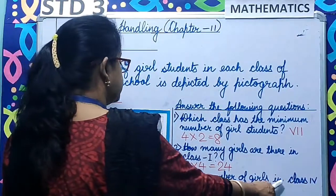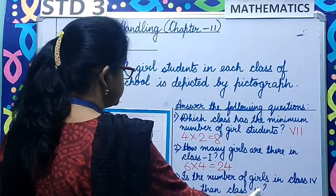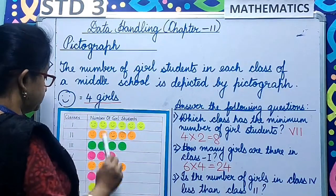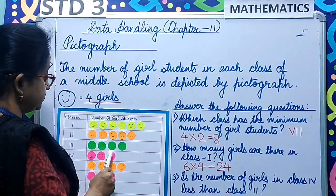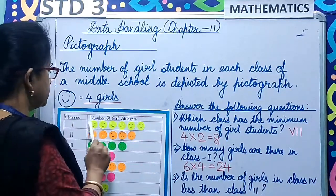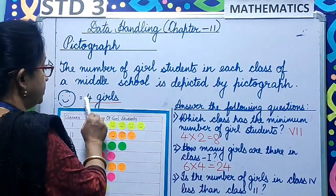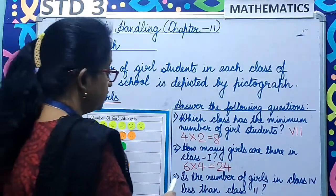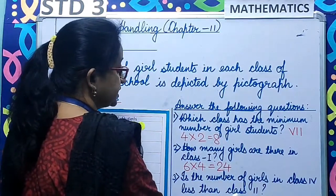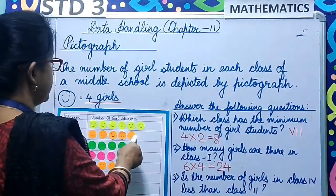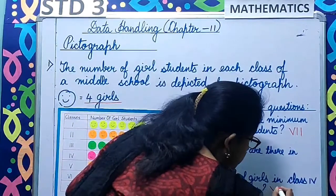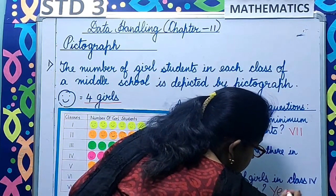Is the number of girls in class 4 less than class 2? For that you have to calculate both class 4 and class 2. Class 4 has 3 smileys: 3 into 4 is 12. Class 2 has 5 smileys: 5 into 4 is 20. Class 2 has 20 and class 4 has 12, so the answer is yes.